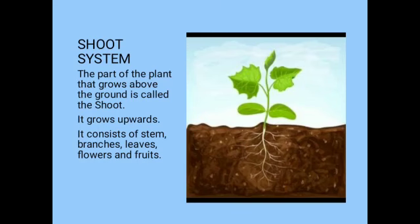Shoot system: The part of the plant that grows above the ground. Kethe woh part joh upar ki taraf grow kerti hain, hum usko kya bolte hain? Shoot. It grows upward. It consists of stem, branches, leaves, flowers and fruits.